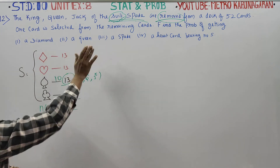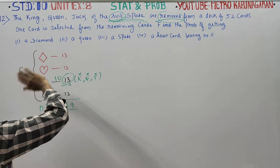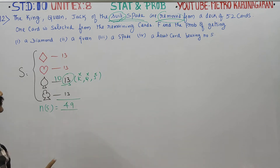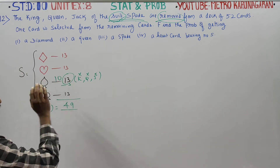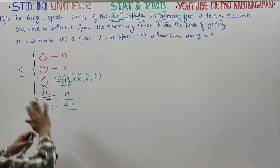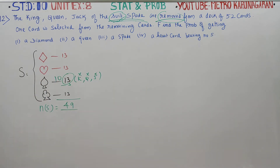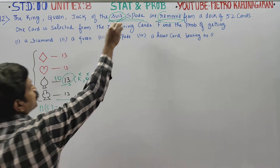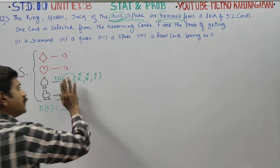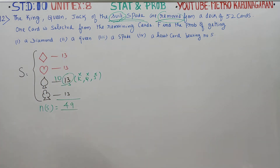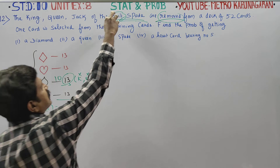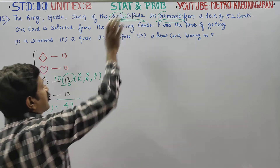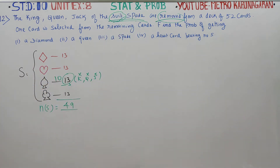Diamond is 13, Heart is 13, Spade is 13, Club is 13. In the spade suit, 3 cards are removed. Find the probability for the following questions.